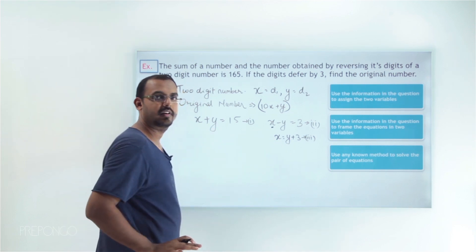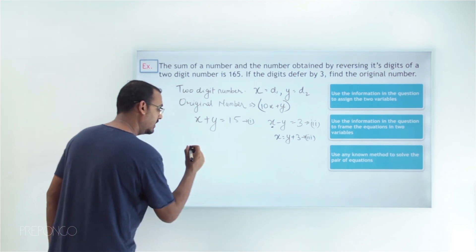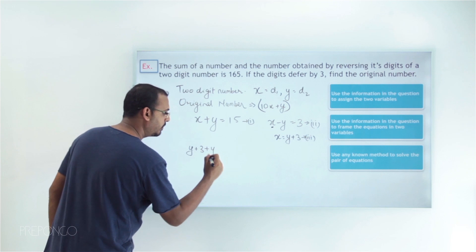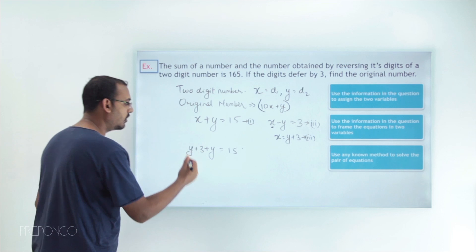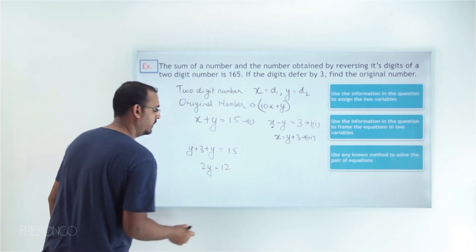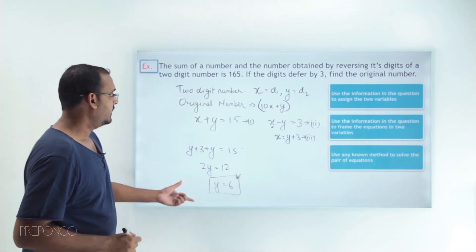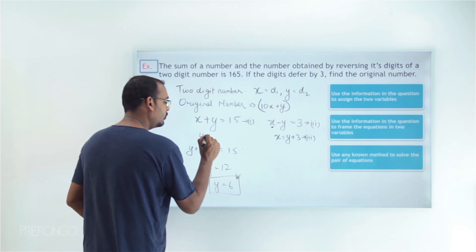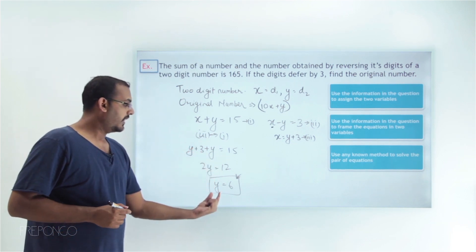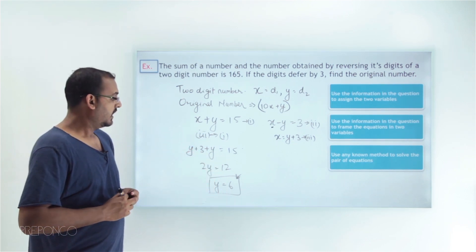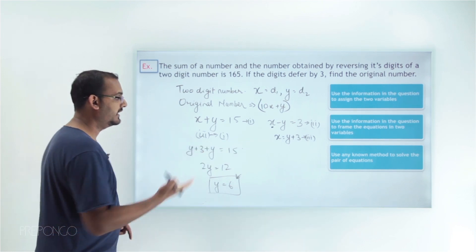Now I can substitute this value of x into equation 1 to get an equation only in variable y. Substituting, instead of x we put y plus 3: so y plus 3 plus y equals 15. Solving this, 2y equals 12, which gives y equals 6. By substituting the value of x from equation 3 into equation 1, we get the value of y as 6.